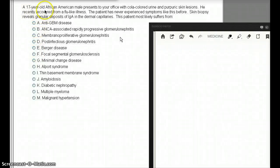In this question, a 17-year-old African-American male presents to your office with cola-colored urine, African-American cola-colored urine, and purpuric skin lesions, purpuric skin lesions.